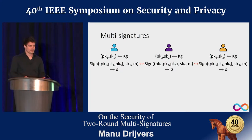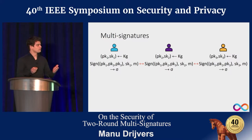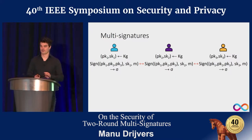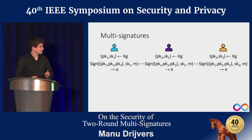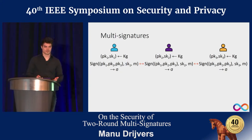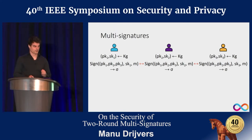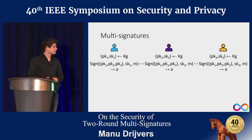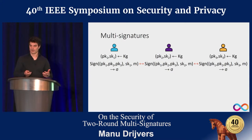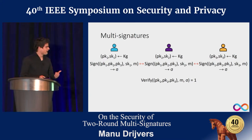Multi-signatures are a cryptographic building block that allow a group of signers to collaboratively sign a common message. For concreteness, let's say we have Alice, Bob, and Charlie. They can all generate a key pair for a signature scheme as usual, but now they can all agree to sign a common message by running a potentially interactive signing algorithm. The result, Sigma, is what we call the multi-signature, and anybody can verify that Alice, Bob, and Charlie all wanted to sign that message M.